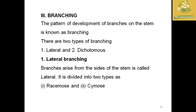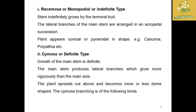The branching pattern of stems has two major types: lateral branching and dichotomous branching. Lateral branching has two sub-types: racemose, also called monopodial or indefinite branching, where the stem grows indefinitely by terminal buds and lateral branches are arranged in acropetal succession, giving a conical shape; examples: Polyalthia.